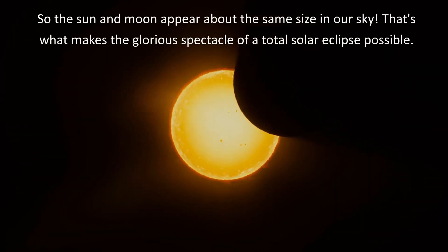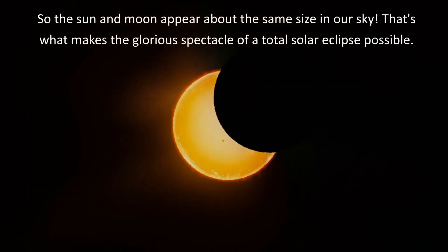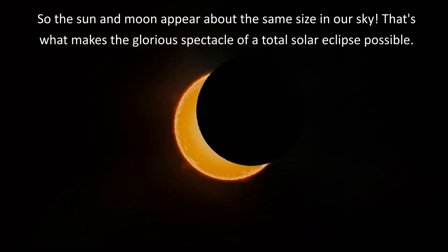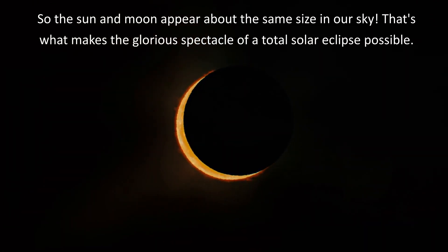So the sun and moon appear about the same size in our sky. That's what makes the glorious spectacle of a total solar eclipse possible.